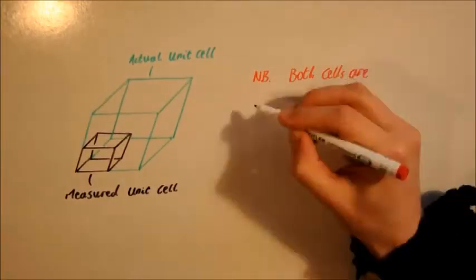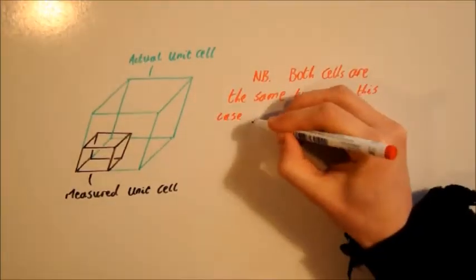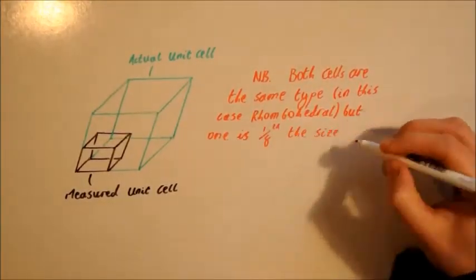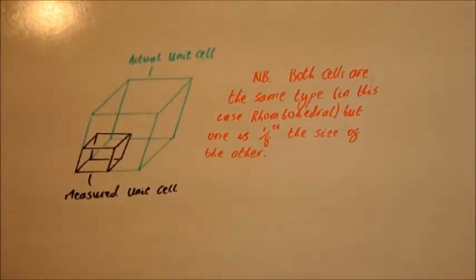It is worth noting that these preliminary unit cell parameters only tell you what shape box contains your repeating unit, not the contents of the box itself.